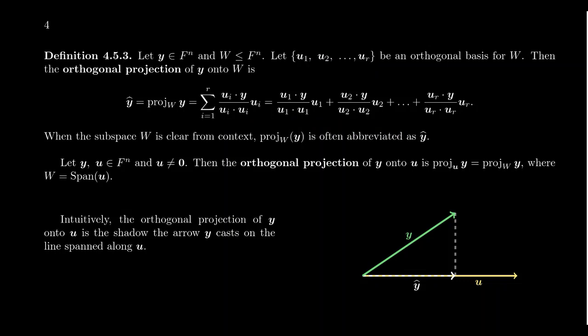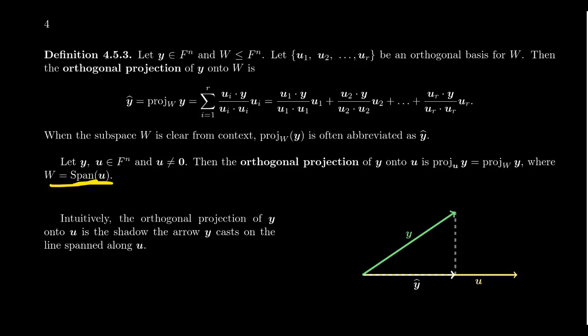In the very special case where W is just the span of a single non-zero vector, this gives a one-dimensional subspace, and we can talk about the projection of a vector onto a line. In that situation, we call it proj_u(y) as opposed to proj_W(y), using the spanning vector directly. If it's just a single vector, we talk about the projection of a vector onto another vector, which is a common occurrence.